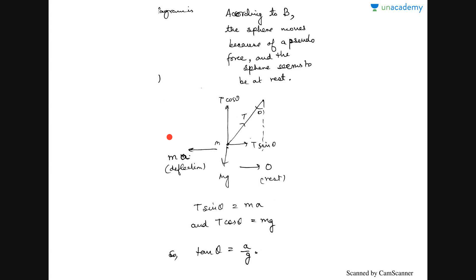This confirms that the ma acting in the opposite direction in Observer B's frame is actually the fictitious or pseudo force. I hope you understood this concept. In the next lesson, we will cover two important consequences related to pseudo force: one is the concept of centrifugal force, and the other is the concept of apparent change in weight measured during the motion of a lift. Thank you, see you next time.